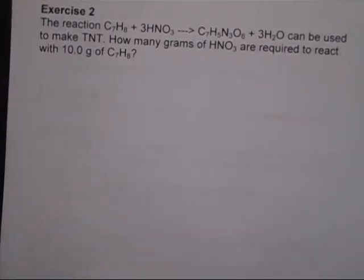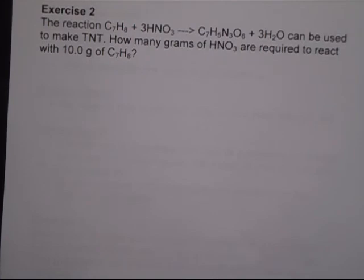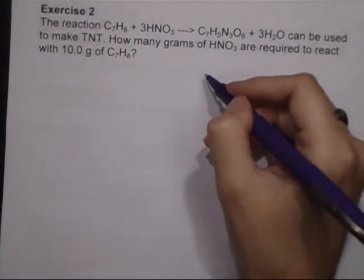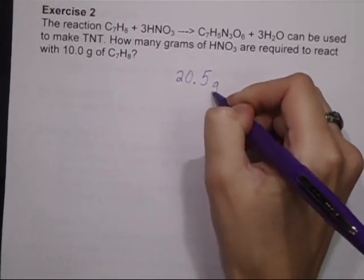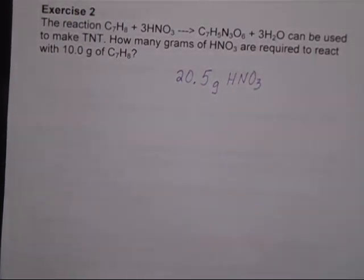Alright, moving on to exercise 2, talking about TNT, trinitrotoluene. You want to solve this in a very similar manner to what we just did. I'm actually only going to give the answer for this problem. And I'd like for you to use the previous question, especially part A, as a guideline to what you need to do. So, the answer for this problem is 20.5 grams of nitric acid. And if you're one of my students and you need help, you need to come see me to figure out how that one is done.